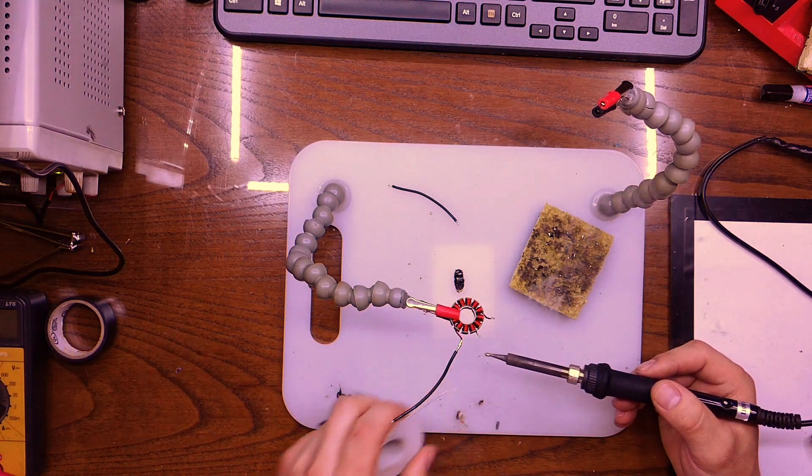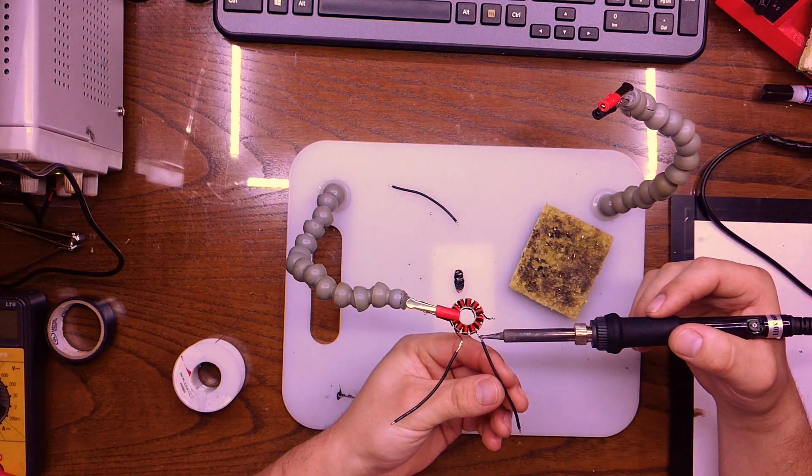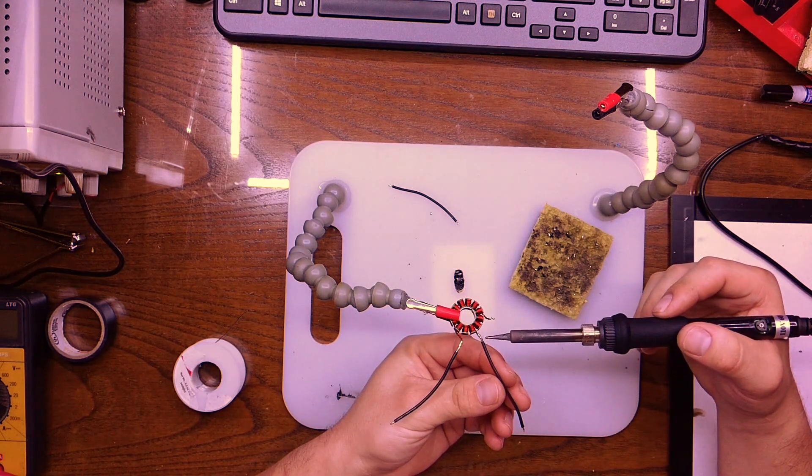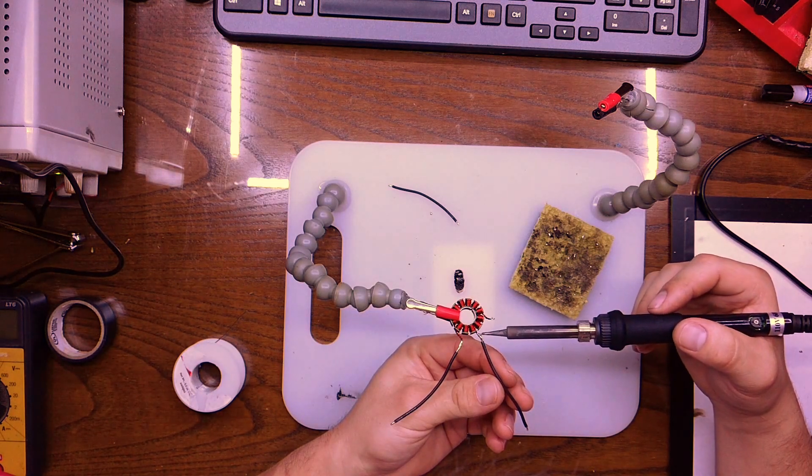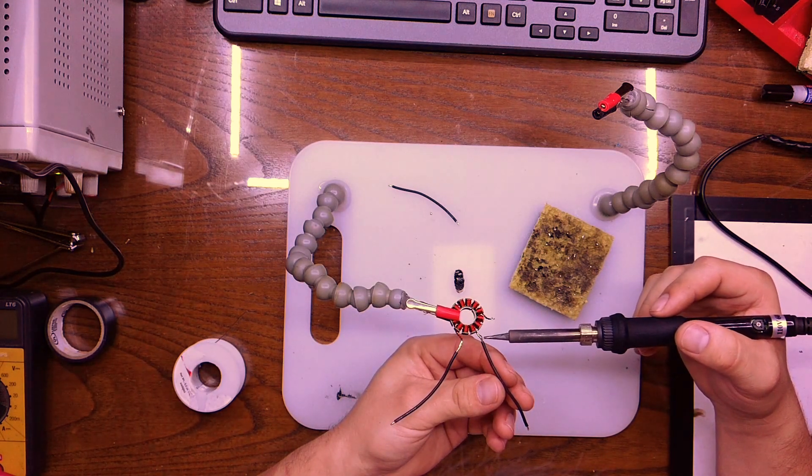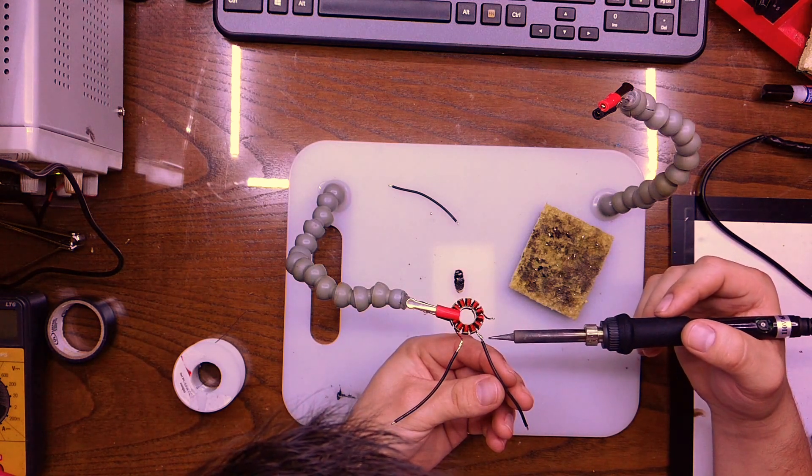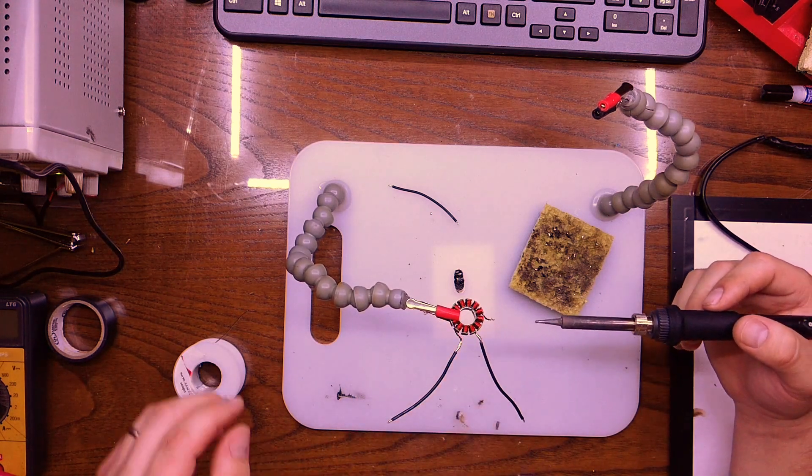So get you another nice blob of solder and work as fast as you can on this, but make sure you do a good job as well. Just kind of melt these two together. Wherever a point comes up like that, just kind of rake it down if you can. And again, a bulge is not a problem, it's a sharp point.